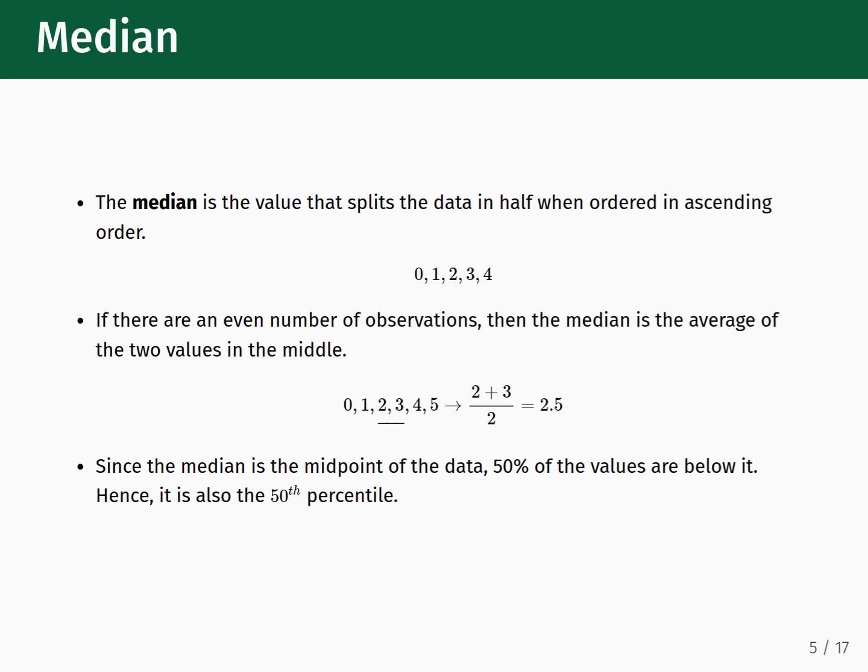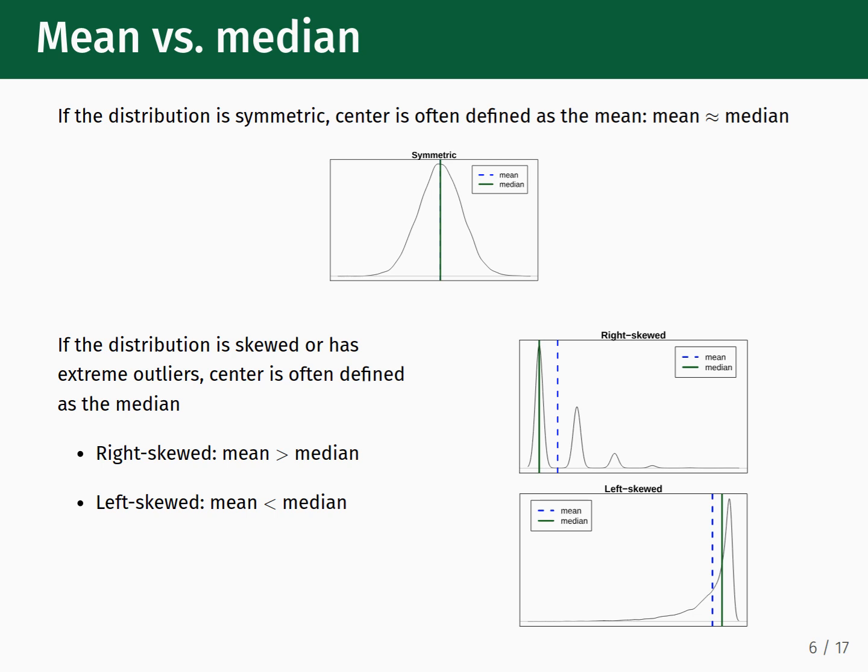So if you have a simple sample containing the observations 0, 1, 2, 3, and 4, then the median would be 2. If the number of observations in the dataset is an even number, then the median is the average of the two values in the middle. Say we included 5 in our sample. Now the median would be the average of 2 and 3, which is 2.5. Since the median is defined as the midpoint of the data, that means that 50% of values will always be below it. Hence, that means that the median is the same thing as the 50th percentile.